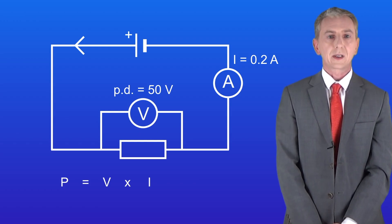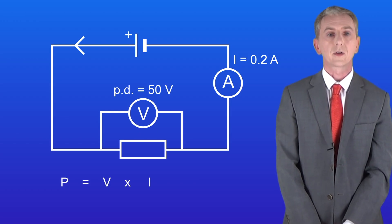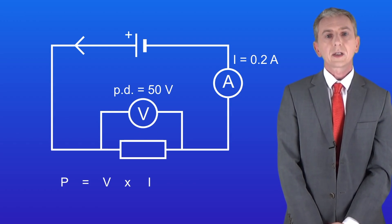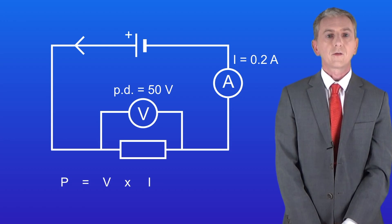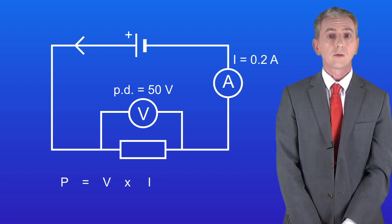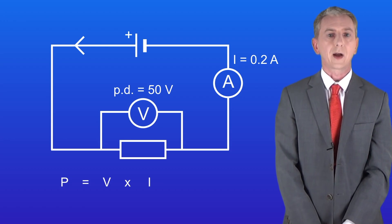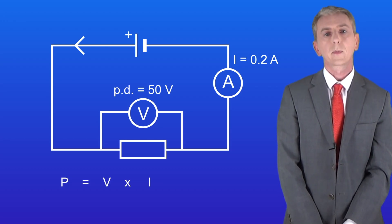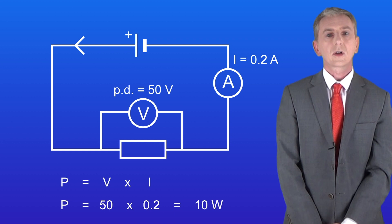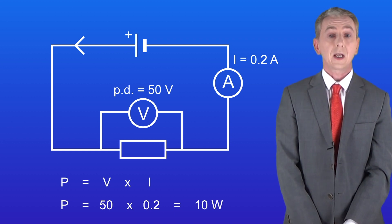The power is the potential difference multiplied by the current. We've got a potential difference of 50 volts across the resistor and a current of 0.2 amperes. Putting these numbers into the equation gives us a power of 10 watts.